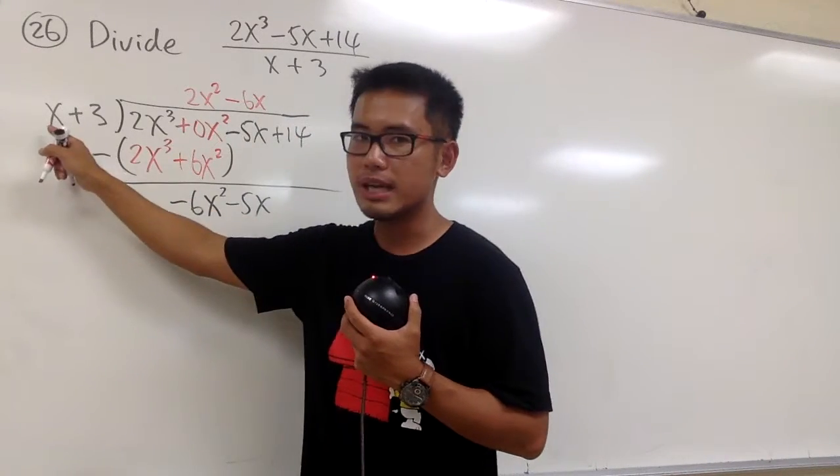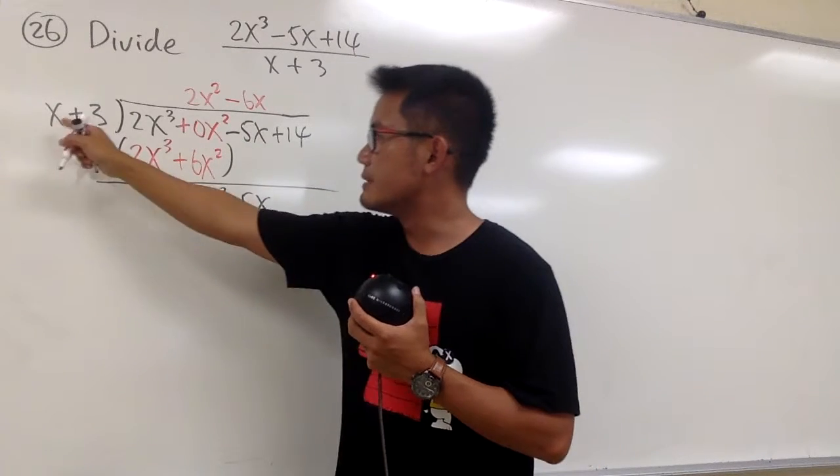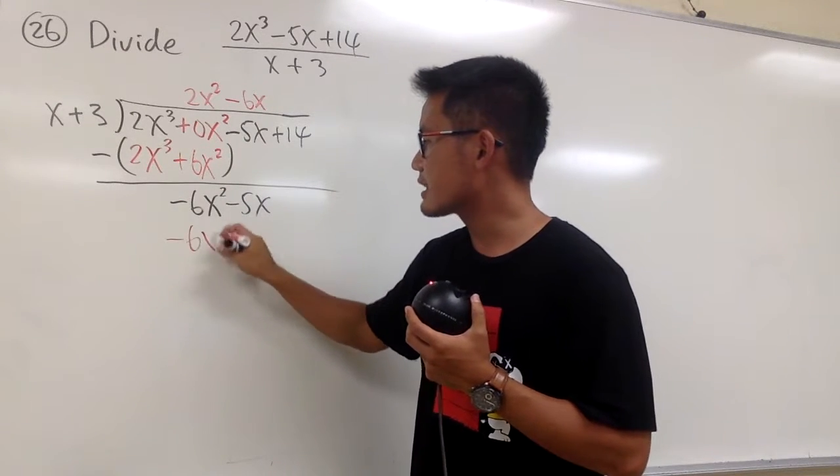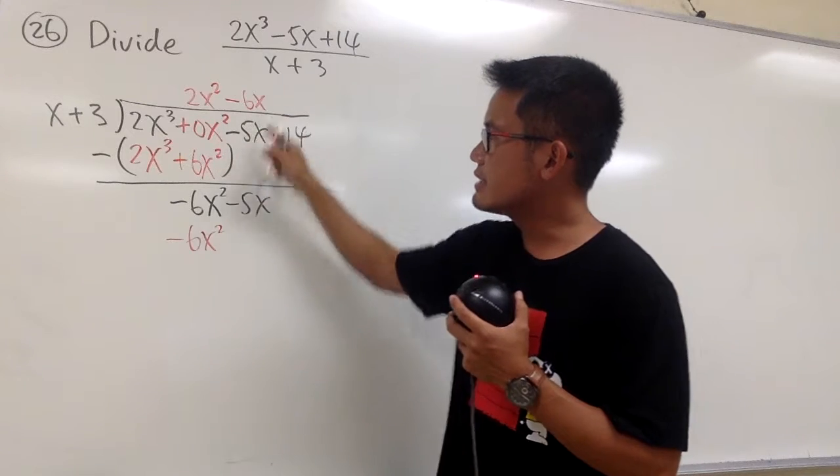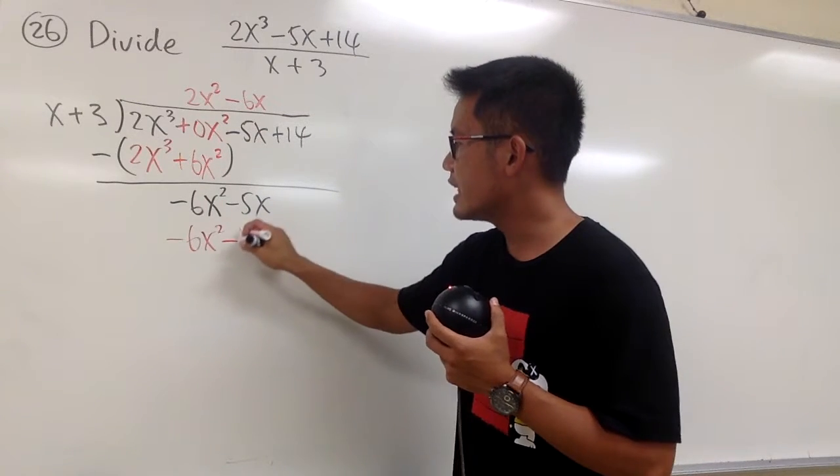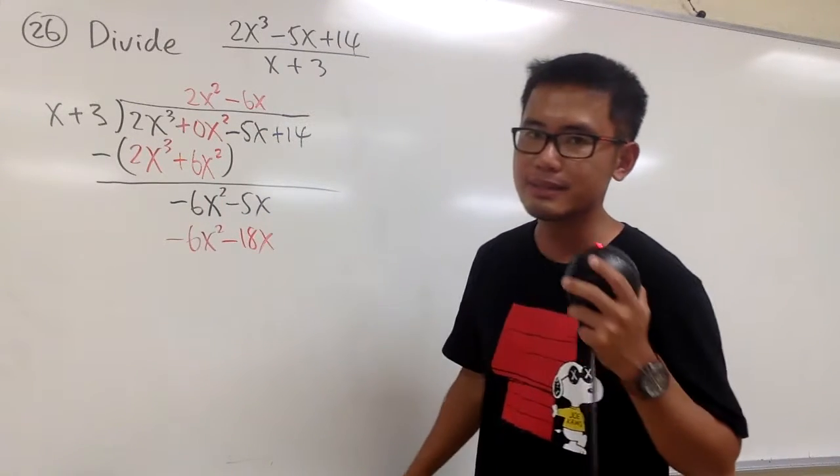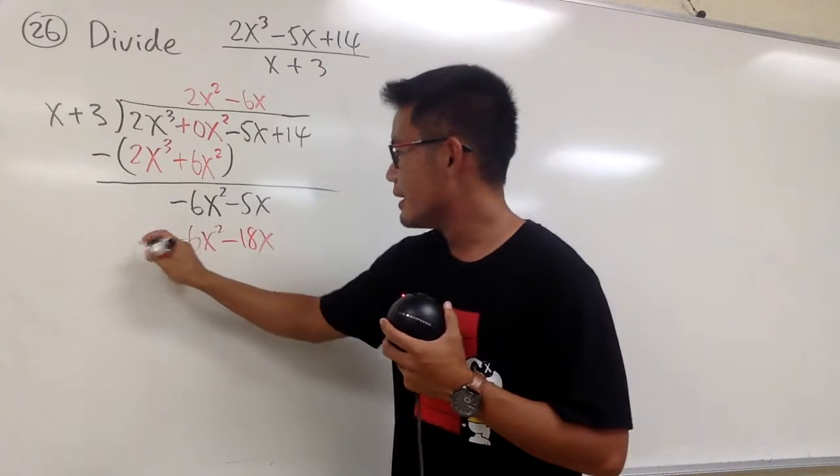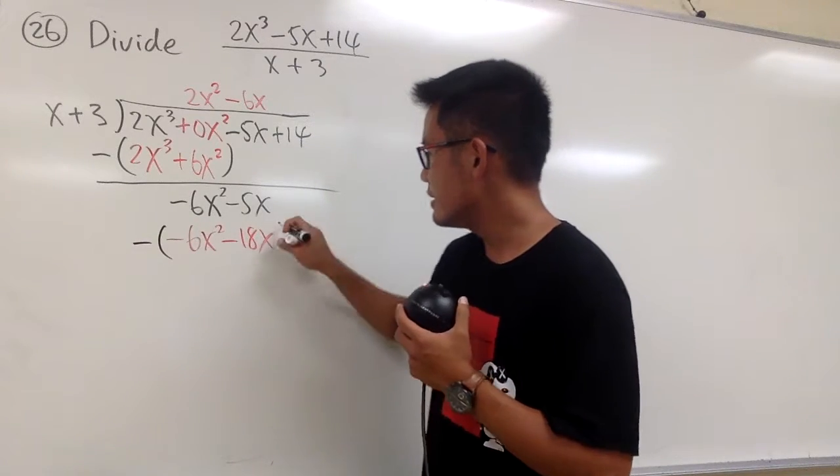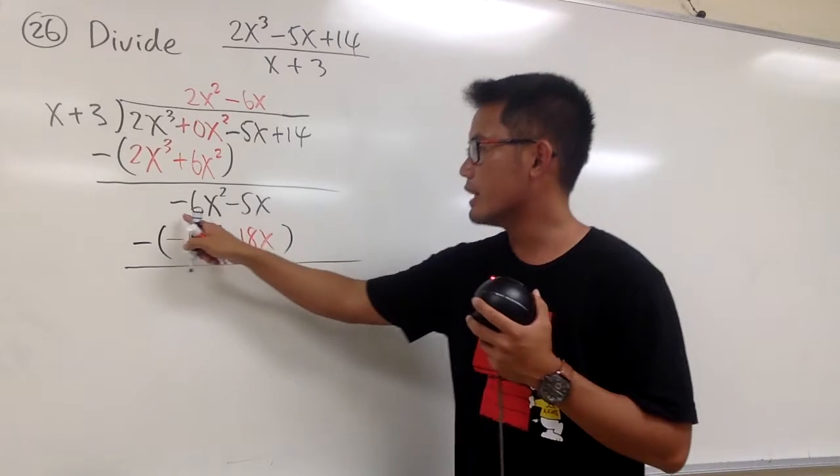And now, take this, multiply with x. Negative 6x times x, that's negative 6x squared. And then, negative 6x times 3 is negative 18x, isn't it? So, we're good. And we continue, put a minus, and also a parenthesis.